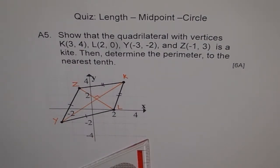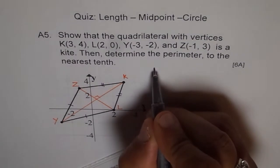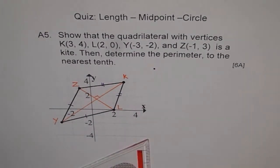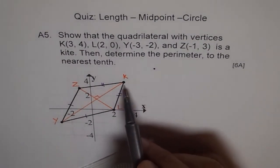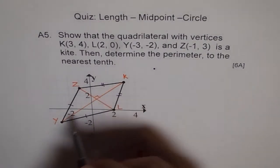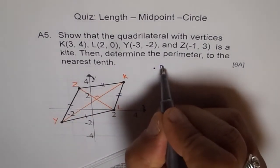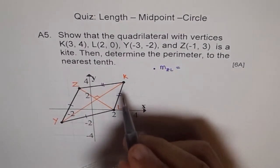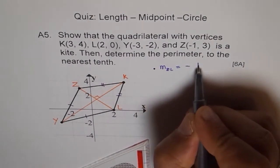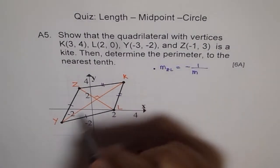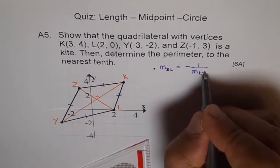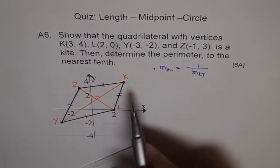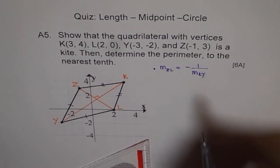First, you need to prove that the slope m of ZL should be equal to the negative reciprocal, meaning m_ZL = -1/m_KY. That is the first thing to prove. You know the coordinates, so you can find the slope using the formula: (y2 - y1)/(x2 - x1).